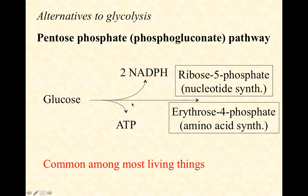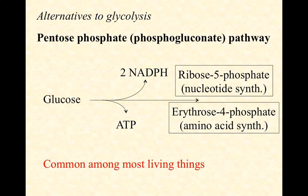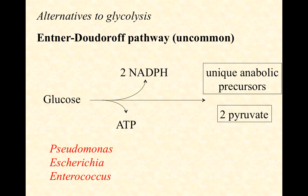The pentose phosphate pathway also yields two high-energy electron carriers called NADPH — a phosphorylated version of NADH. NADH can donate electrons to the electron transport chain, but NADPH cannot. What NADPH can do is supply electrons for building new molecules. Building molecules requires creating covalent bonds, which represent shared electron pairs, and NADPH is the easiest way to provide those electron pairs. Consider when an organism would switch from glycolysis to the pentose phosphate pathway.